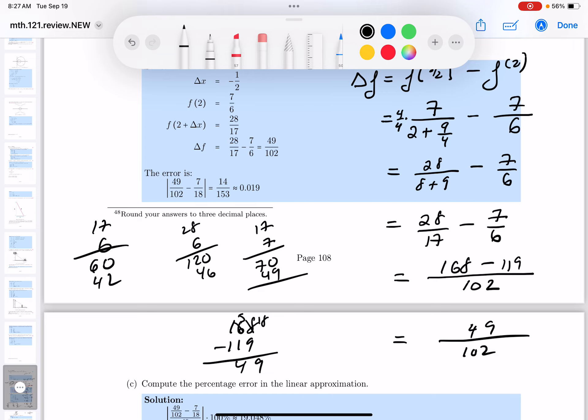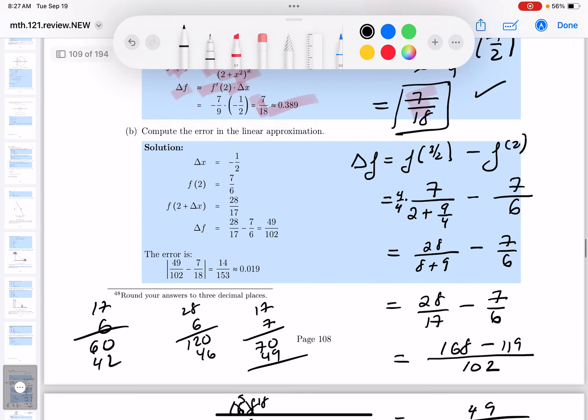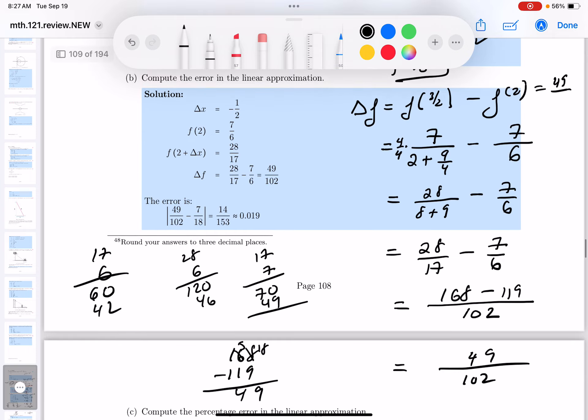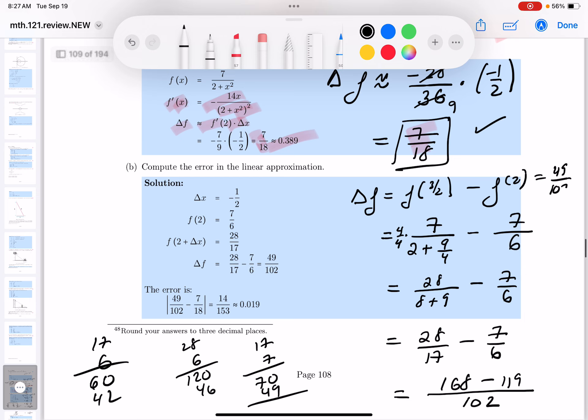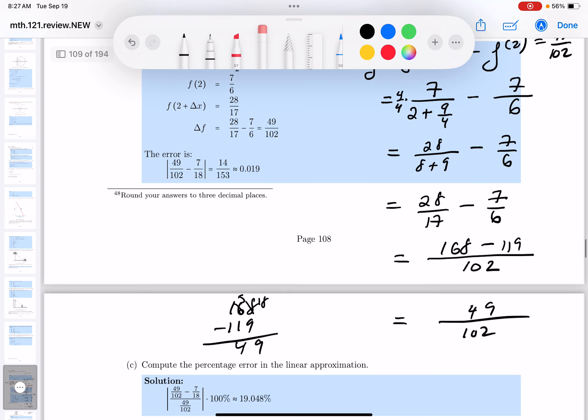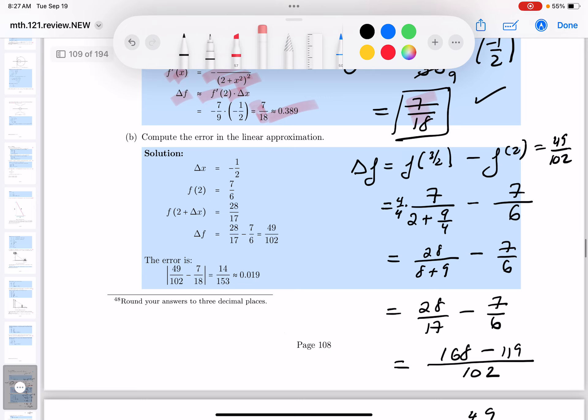So someone said, what did you just compute? Well, I computed this thing. 49 out of 102. Now, we're not done yet. I'm going to get my eraser out. Some people do arithmetic in their head. And that's fine. But as long as you do it correctly, you could also use a calculator.